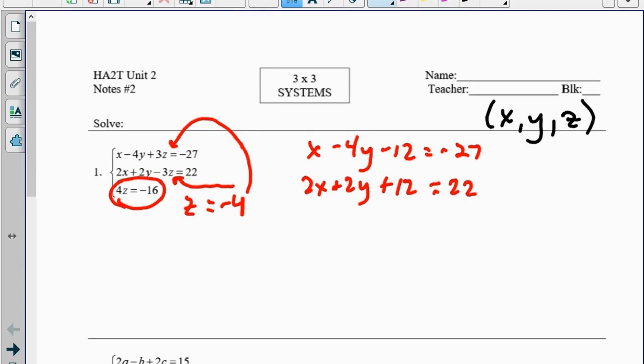Now I can turn this into something that we should be pretty good at by now. x minus 4y equals negative 15, and 2x plus 2y equals 10.